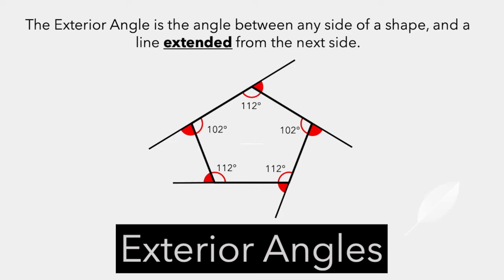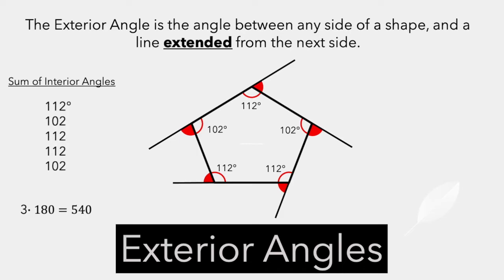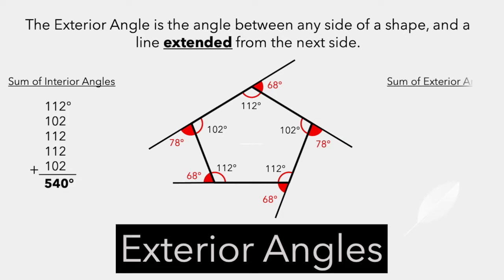Let's add some degree measurements to our interior angles. Theoretically, if we add these up — because this is a pentagon — these numbers should add up to three times 180, or 540 degrees. So let's check: 112, 102, 112, 112, 102 — add all those together and we get 540. Now let's look at the exterior angles. The top exterior angle is a linear pair with 112, which means that exterior angle is 180 minus 112, which is 68 degrees. The one that partners with 102 is 78 degrees — those are supplementary angles. So we have 68, 78, 68, 68, 78. Adding all those exterior angles together, we get 360 degrees.